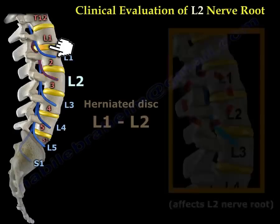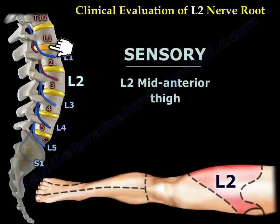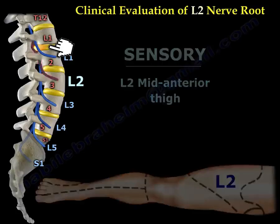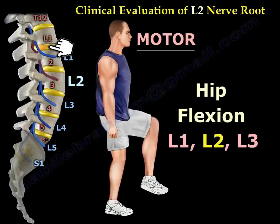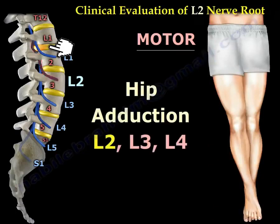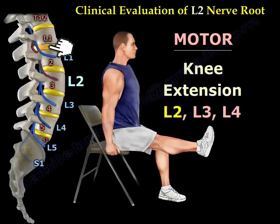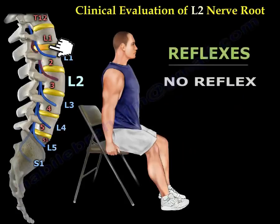Disc herniation between L1 and L2 will affect the L2 nerve root. The sensory changes will be at the mid-anterior thigh. The motor will be hip flexion — L1, L2, and L3. Hip adduction is L2, L3, and L4. Knee extension is L2, L3, and L4. There is no reflex for the L2 nerve root.